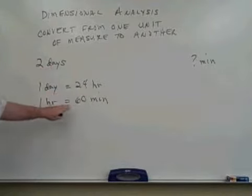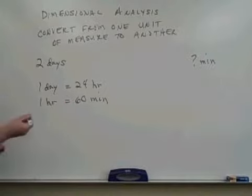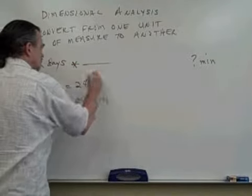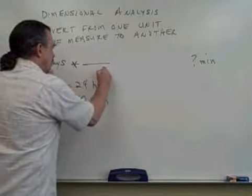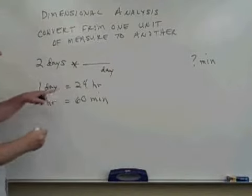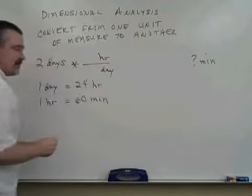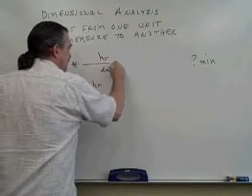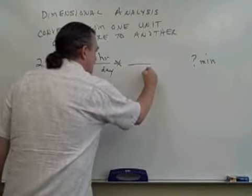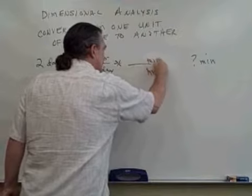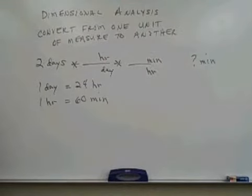So this is going to take two conversion fractions - one to turn the days into hours, one to turn the hours into minutes. So I want the days to go away. That will need to go in the bottom, and I'll have hours on top. Then I'll put in a conversion fraction that will make the hours go away and leave minutes in the numerator.